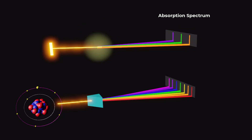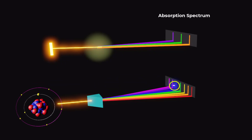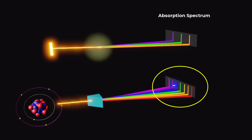Similarly, when an electron jumps from an excited state to the ground state, it emits light in the form of photons. The set of wavelengths emitted is called the emission spectrum and it is unique to each element.